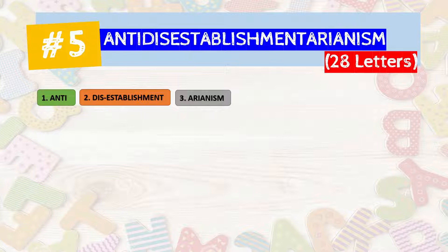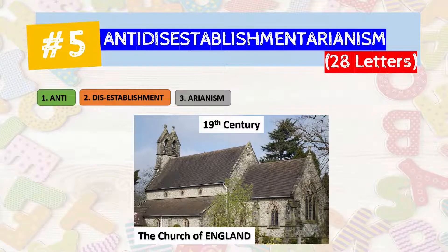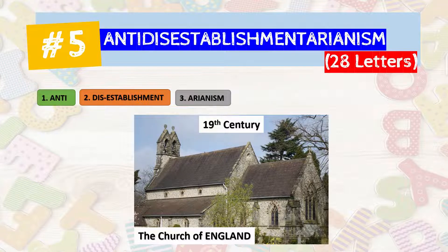So what does this word mean? The word typically means the opposition to the withdrawal of state support. It is technically a term referring to a political movement in 19th century Britain that sought to separate church and state — the Anglican church to be exact. In this case, the political movement wanted to disestablish the Church of England as the official state church of England, Ireland, and Wales.